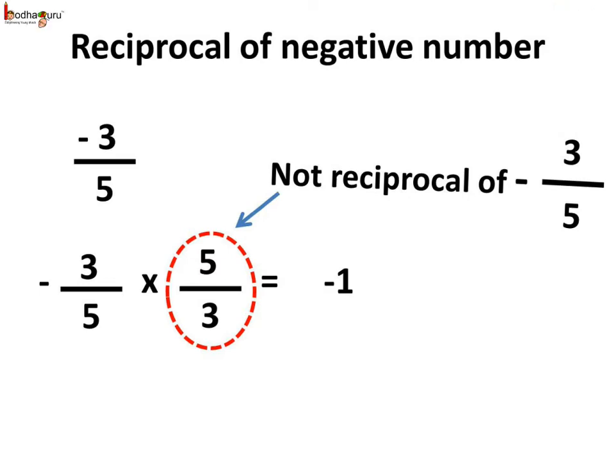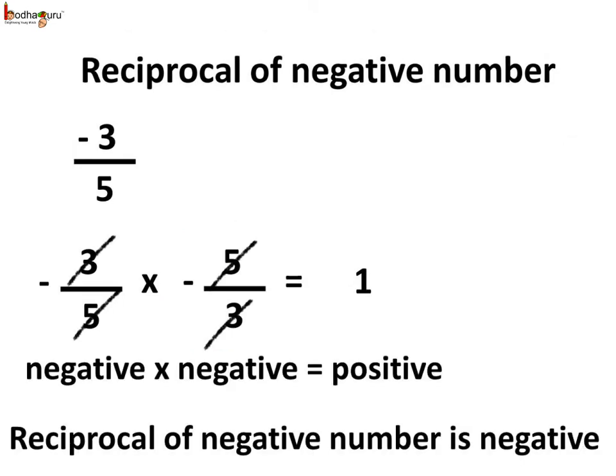Then what is it actually? If we assume minus 5 by 3 as the reciprocal, then negative number multiplied by negative number — as both have the same signs — the result would be a positive number, which is 1. Thus, the reciprocal of minus 3 by 5 is minus 5 by 3, not just 5 by 3. So remember, the reciprocal of a negative number is also a negative number.